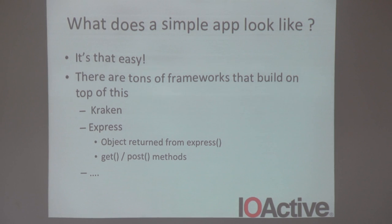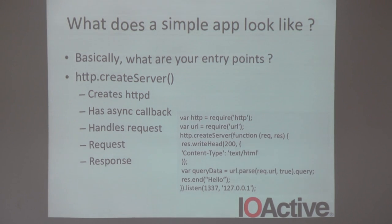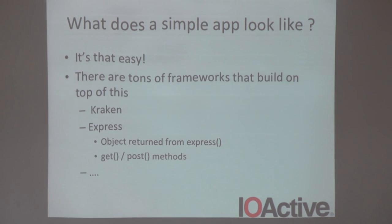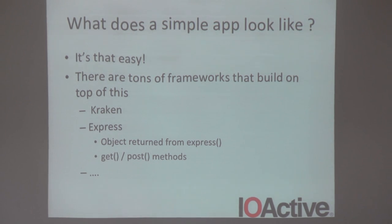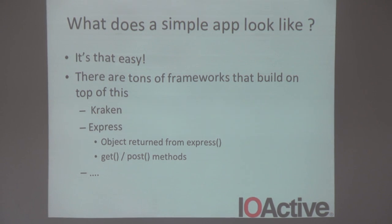There are a number of frameworks built on top. The most common one is Express, which gives you a superset of APIs including request routing methods. There's also Kraken from eBay, which provides additional APIs including security APIs. There's a long list of frameworks, but those are the two I've looked at.